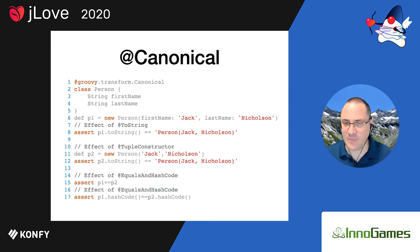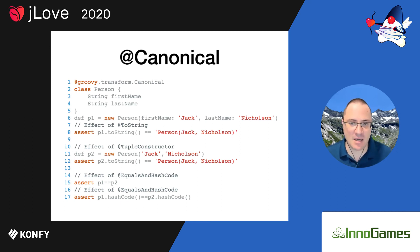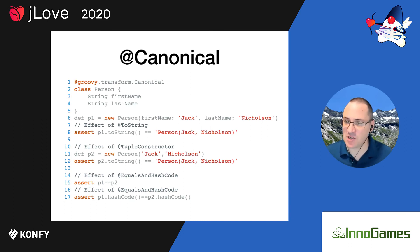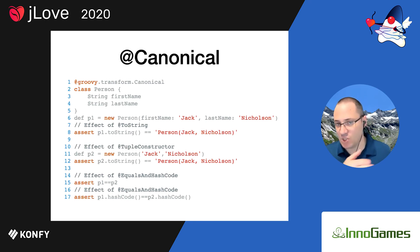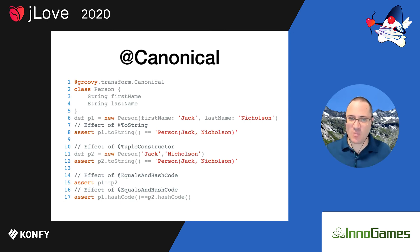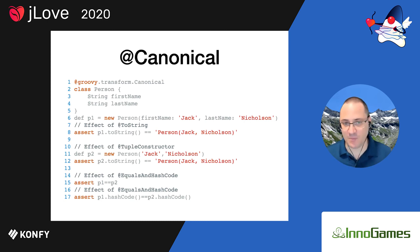Here's another typical AST transformation: @Canonical. Canonical is actually a meta-AST transformation because it applies ToString, TupleConstructor, EqualsAndHashCode, and a few others. So you apply a single transformation in one line but get a lot of behavior out of it because it applies everything else for you.